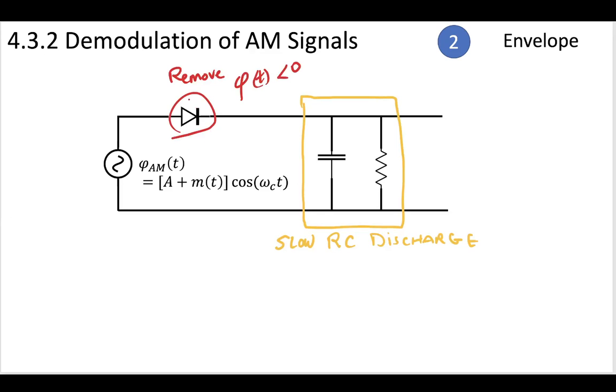So this first part of the envelope detector is going to remove all parts of our signal that are lower than zero. When you pass something through a rectifier, you may have done this in one of your laboratory classes, you know that this is going to remove all those parts of the wave that are greater than zero.